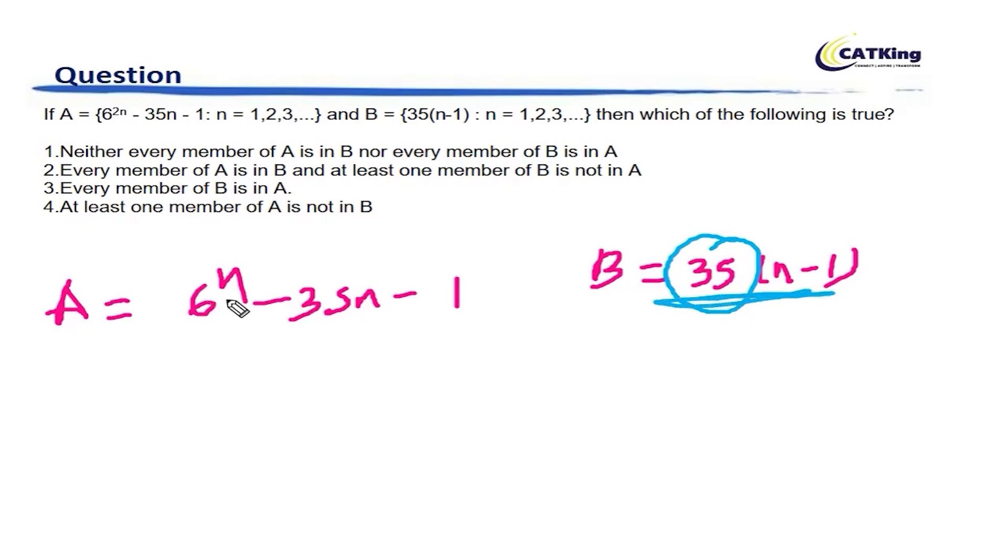A, let's have a look. Here 6 to the power 2n can be written as 36 to the power n. Minus 1 can also be written as 1 to the power n.